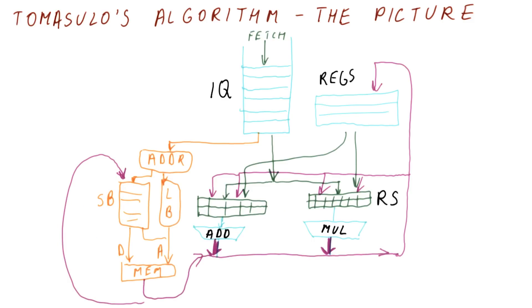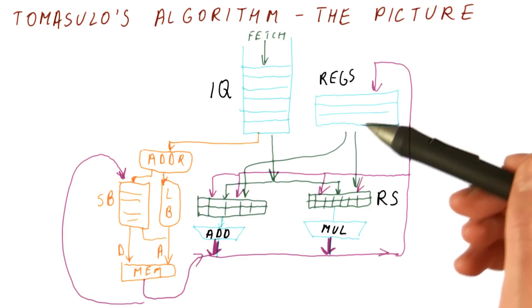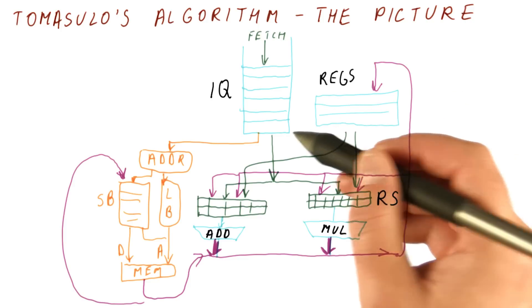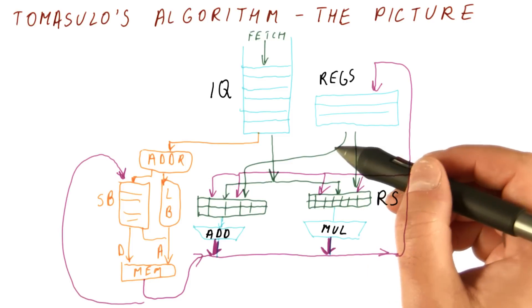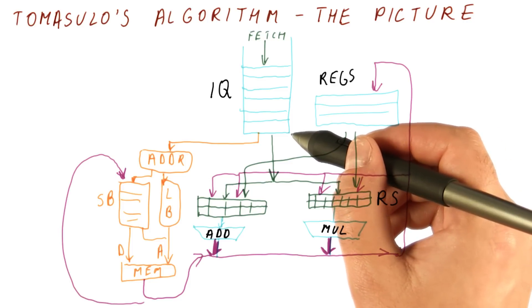But this here is pretty much the way it's done now, modulo some small adjustments. Before we go into the details of Tomasulo's algorithm, let's give names to some things on this picture. Then we will discuss what each of these things really needs to do.